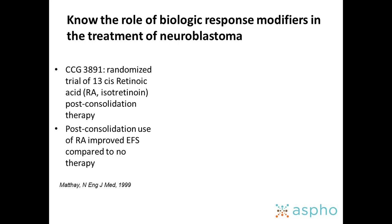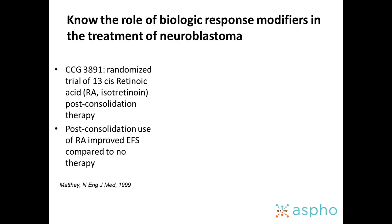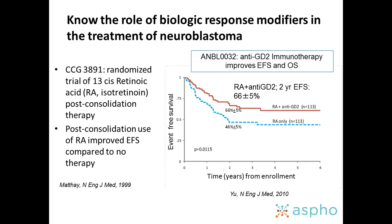Regarding biologic response modifiers: a randomized trial in the 1990s showed that addition of isotretinoin as a biologic modifier improved outcome after transplant or aggressive chemotherapy compared to no further therapy — those who received isotretinoin had a decreased risk for recurrent disease. A subsequent study in the Children's Oncology Group from 2000 to 2009 further showed that addition of immunotherapy on top of isotretinoin improves outcome for high-risk neuroblastoma. Post-consolidation standard treatment is now isotretinoin plus immunotherapy.